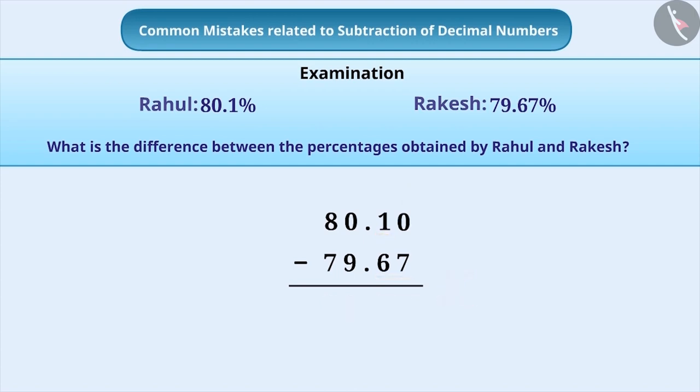Some students use 0 to make the number of digits equal after the decimal point. But while doing subtraction, they simply subtract the smaller number from the bigger number. Here, they subtract 0 from 7 and write 7 as the answer. 1 is subtracted from 6 and 5 is written as the answer. This is incorrect.